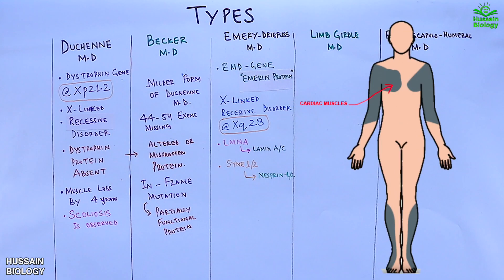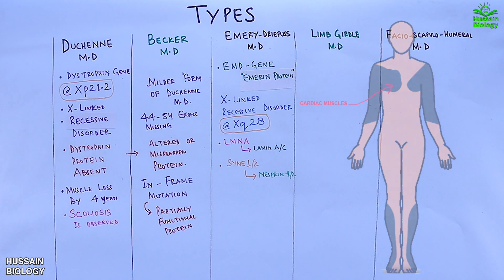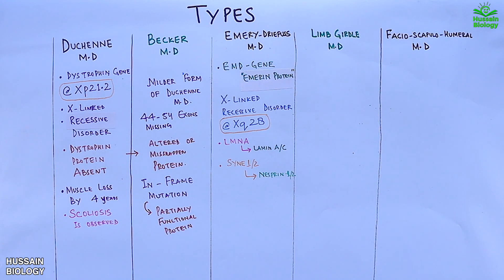The diagram shows the muscles affected by Emery-Dreifuss muscular dystrophy, which includes cardiac muscles as well. Moving forward, the next muscular dystrophy is Limb-girdle muscular dystrophy, which has both recessive and dominant inheritance patterns.